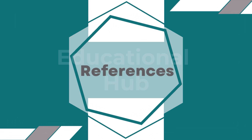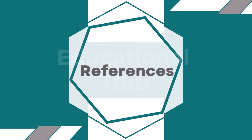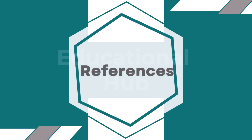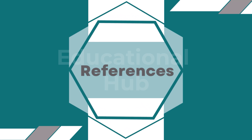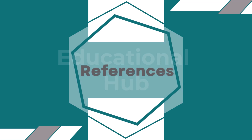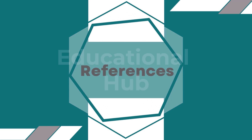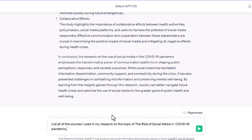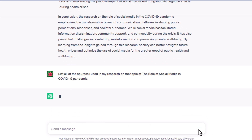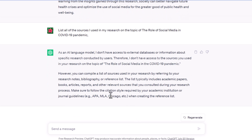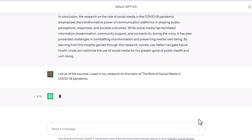And lastly: References. Use the prompt: 'List all of the sources I used in my research on the topic of the role of social media in the COVID-19 pandemic.' You can use these examples of ChatGPT prompts to write your PhD thesis. For your specific topic and research methods, ensure that the prompts are tailored.